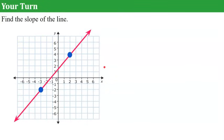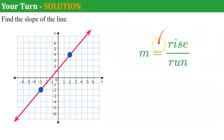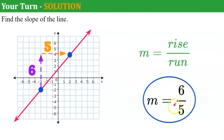Now it's your turn. Pause the video, find the slope of the line, and come back when you're ready to check your work. Welcome back. Using rise over run, starting at the leftmost point we rise 1 through 6, and run 1 through 5. Rise is 6 and run is 5, giving a slope of 6/5 in simplest form. Please leave this as an improper fraction — do not write it as a mixed number.